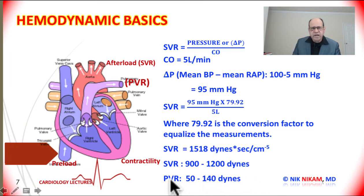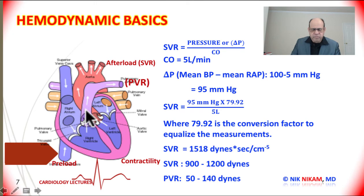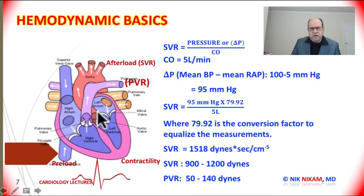We can calculate the pulmonary vascular resistance by substituting the aortic pressure with the mean pulmonary artery pressure, and substituting the right atrial pressure with the mean left atrial pressure, because cardiac output remains the same on both the right and left sides of the heart.